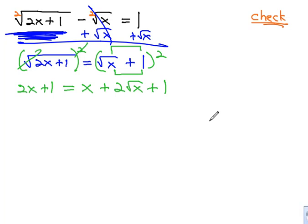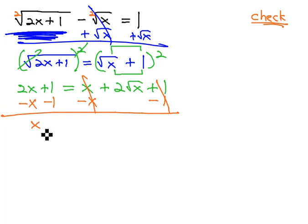Now, we can solve the resulting equation, which we notice still has a radical in it. So let's repeat and get that radical alone by subtracting 1 and subtracting x from both sides. This leaves us with x plus 1 minus 1 is 0, equals 2 root x.